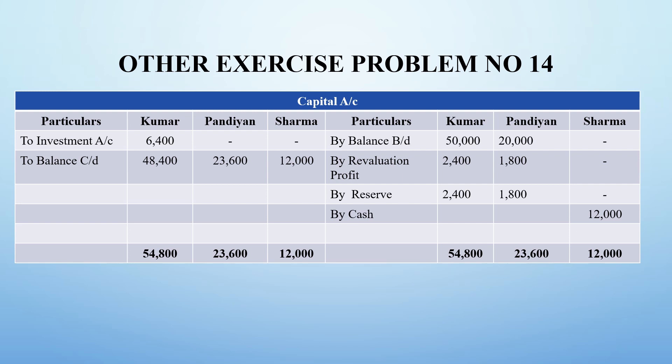By cash, Sharma has brought in ₹12,000 as capital in the Sharma column. On the debit side, Kumar has acquired the investment worth ₹6,400 — he has purchased it from the business, so it is going out, and Kumar's capital account is debited by ₹6,400. The balancing figures are: Kumar ₹48,400, Pandian ₹23,600, and Sharma ₹12,000. The grand total on both sides is: Kumar ₹54,800, Pandian ₹23,600, and Sharma ₹12,000.